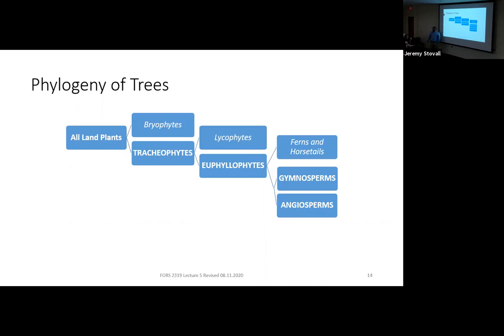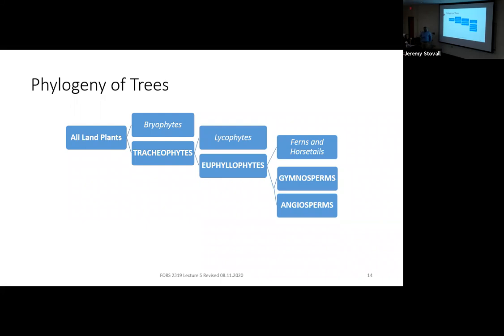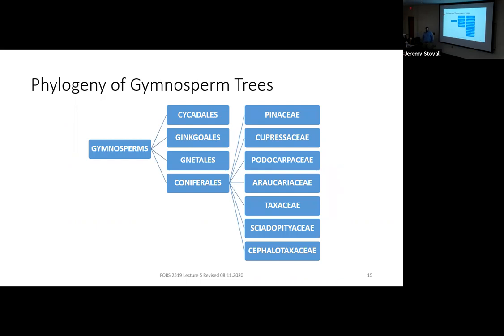Let's start with the gymnosperms first because there are fewer of them, so it's simpler to go over, and we can go over them at a greater level of detail because gymnosperms are not as diverse as angiosperms. We only have four orders of gymnosperms. But let's start with the Coniferales, because when we think gymnosperms, most of what we're thinking is going to be in the Coniferales. Depending on the taxonomy you're following, you might also see this listed as the Pinales — same thing.